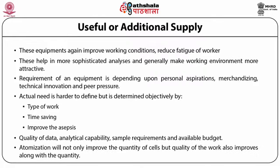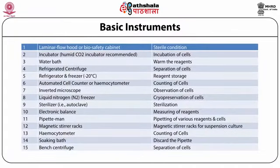Automation will not only improve the quantity of cells but also the quality of work. Therefore, if you want to do animal cell culture experiments without proper instruments, you may not succeed in producing useful data. However, many laboratories in our country have good infrastructure and are producing highly efficient results — even substances that can be utilized for human or animal treatment.